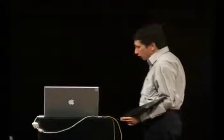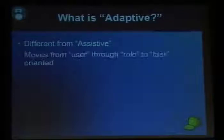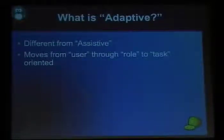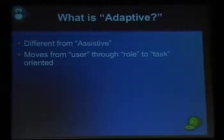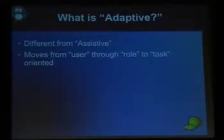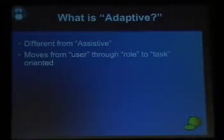What is adaptive technology or adaptive user interface? Some people consider it similar to assistive technology, but it's different. Assistive technology covers screen readers, magnifiers, and keyboard accessibility — things to help people with different abilities use a computer. Adaptive UI can be helped by those, but it's not the same thing. An adaptive user interface takes the design viewpoint from user-centric through role-centric, and ends up at a task-centric approach.